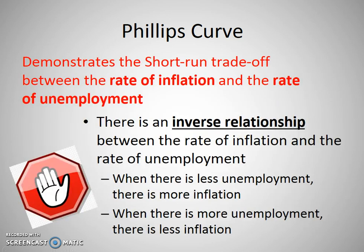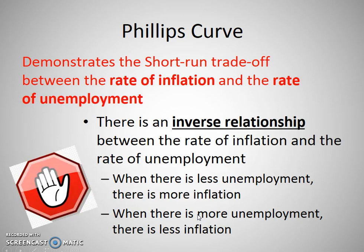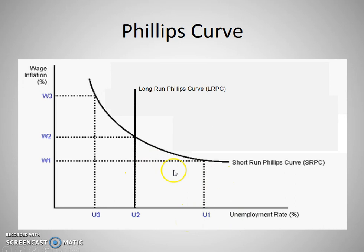The Phillips curve demonstrates the relationship between the rate of inflation and the unemployment level. There's an inverse relationship — as the inflation rate goes down, the unemployment rate goes up. This should make sense if you think about the ADAS model, where the price level is along the vertical axis and real GDP or output is along the horizontal. When real GDP is going up, unemployment is going down, which is why you have this inverse relationship shown with the Phillips curve.